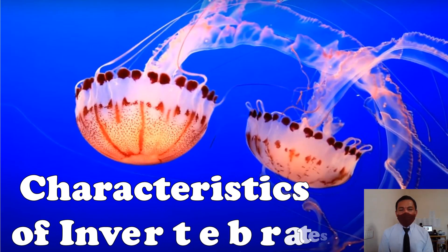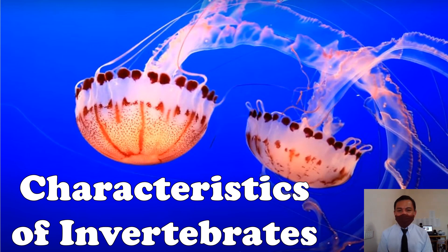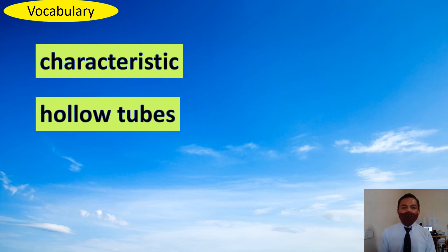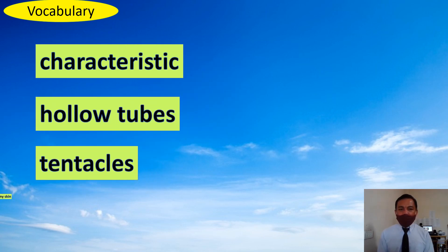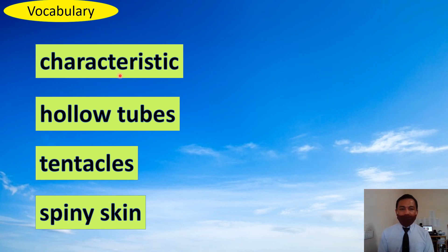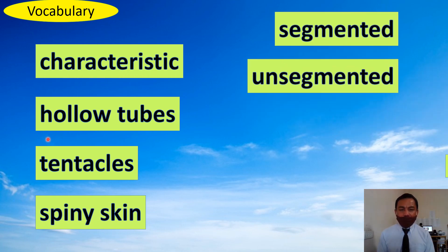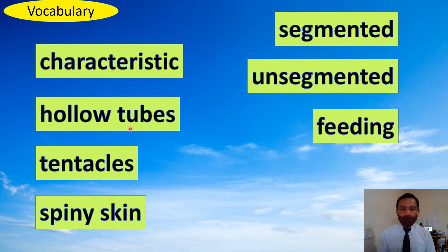Hi students, welcome back to our science class. Today we're going to learn about characteristics of invertebrates. Read your vocabulary words two times. First: characteristic, hollow tubes, tentacles.